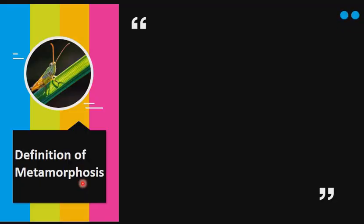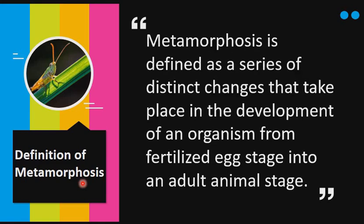Definition of metamorphosis. Metamorphosis is defined as a series of distinct changes that take place in the development of an organism from fertilized egg stage into an adult animal stage. The word metamorphosis is derived from two words: meta, which means change, and morphosis, which means form. So if you combine the two words together, you will understand clearly that metamorphosis is all about change that happens in form.